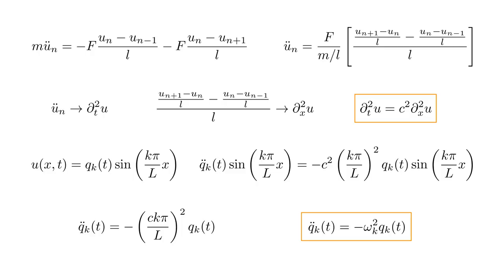Defining the quantity in parentheses as omega k, we arrive at the equation of motion for this kth mode: q_k double dot equals minus omega_k squared times q_k.